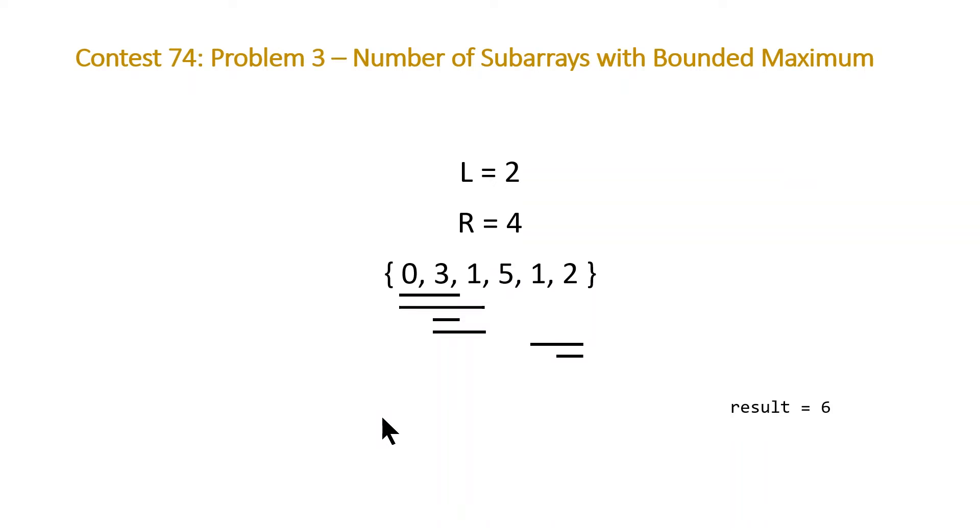The way we can think about trying to get towards this solution is that there are three possible types of values in our array. I like to think of those values as reset values, the needed values, and okay values. If we highlight our array based on these three, we end up with the following.